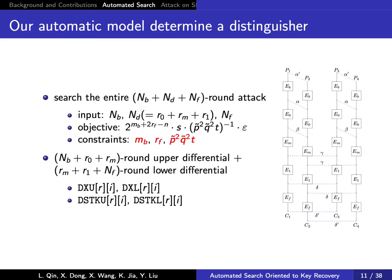We present an extended model for searching the entire N_B + N_D + N_F round attack. The aim is to find new distinguishers that result in key recovery attacks with more rounds. Our target is to maximize the total attacked rounds. However, in practical programming, we take N_B, N_D, and N_F as parameters to input the model, and the target is the time complexity.